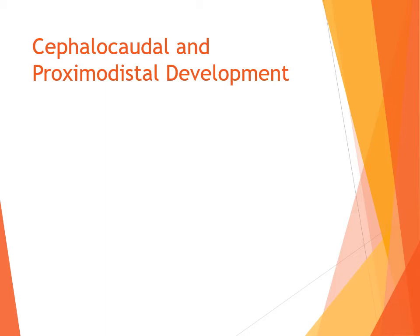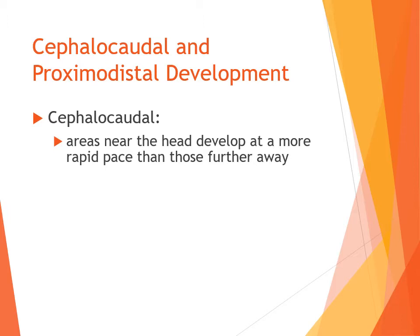We're going to talk about characteristics of development pertinent to prenatal development. When development is characterized as cephalocaudal, all we mean is that the head and areas near the head develop faster than any other area. Development taking place in the brain, near the head structure, happens faster than near the feet, legs, or the rest of the body.